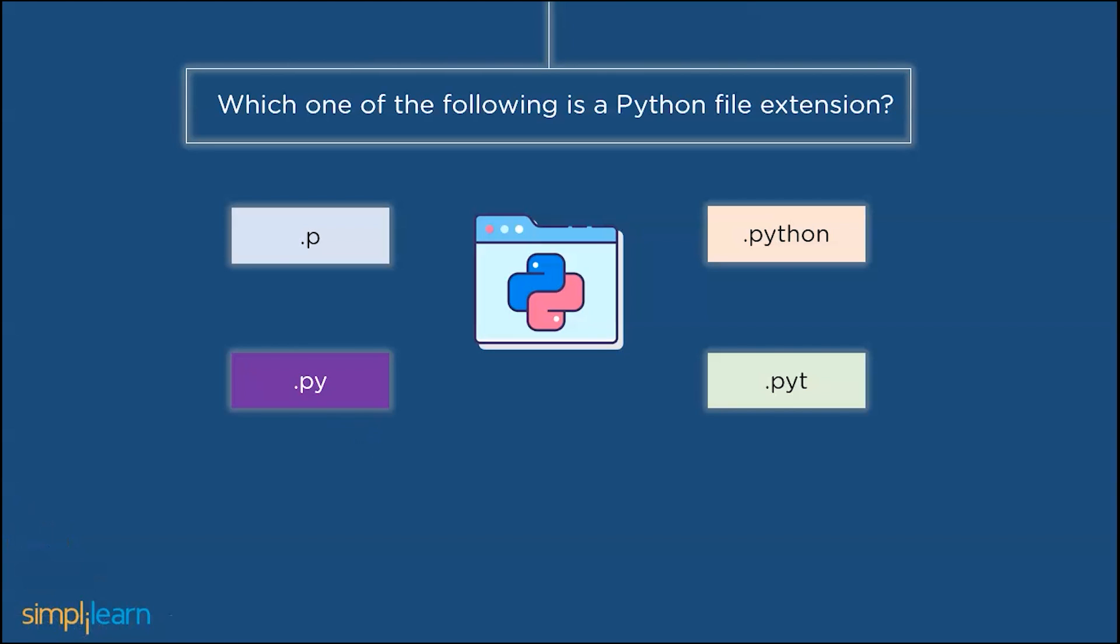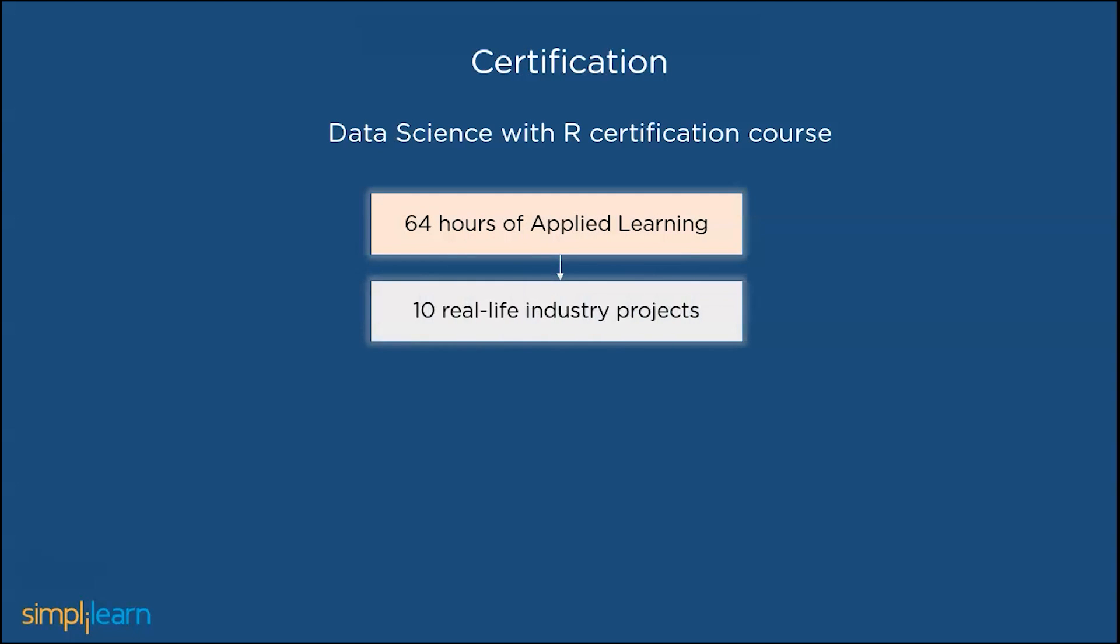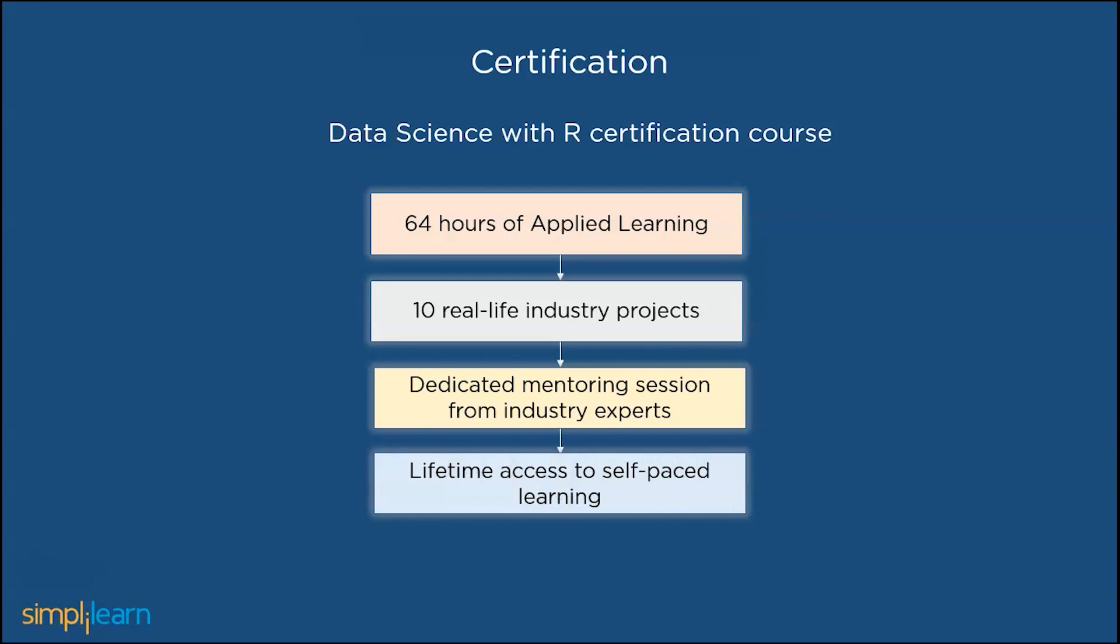Simplilearn offers you the best courses for both Python and R. Certification offered by Simplilearn regarding R is Data Science with R certification course. It is a skill up course that contains 64 hours of applied training, 10 real life industry projects, dedicated mentoring sessions from industry experts, and finally lifetime access to self-paced learning. I will provide the link for this course in the description below.